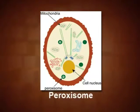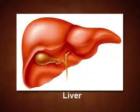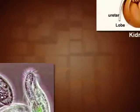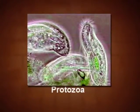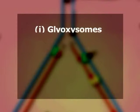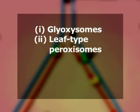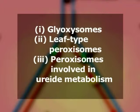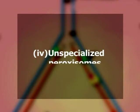Peroxisomes, though commonly found in liver and kidney of mammals, are also found in cells of protozoa, yeast, and higher plants. In plants, the following four types of peroxisomes are known: number one, glycosomes; number two, leaf type peroxisomes; number three, peroxisomes involved in uride metabolism; and number four, unspecialized peroxisomes.